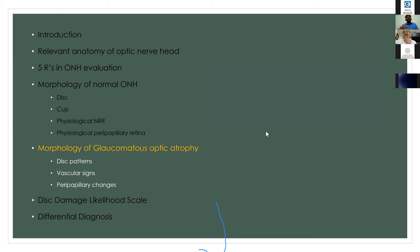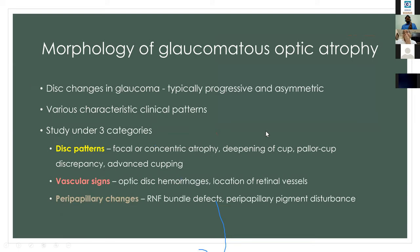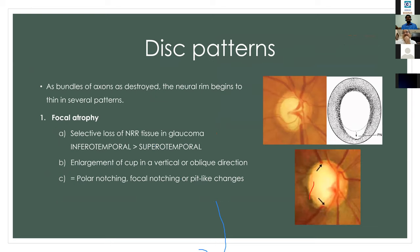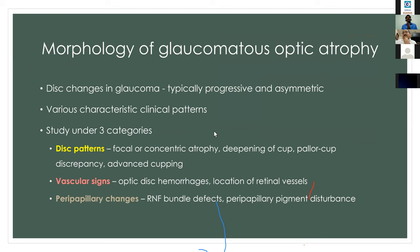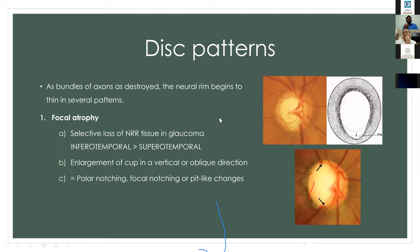Coming to the morphology of glaucomatous optic atrophy, disc changes in glaucoma are typically progressive and/or asymmetric. Various characteristic patterns are observed, which can be studied under three categories: disc patterns (focal or concentric atrophy), vascular signs, and peripapillary changes.